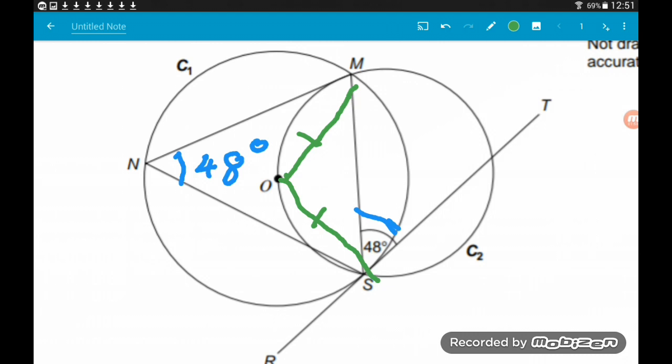So 48 is half of this angle here, so that angle there is going to be two times 48. Two times 48 is 96, so that angle is now 96 degrees.